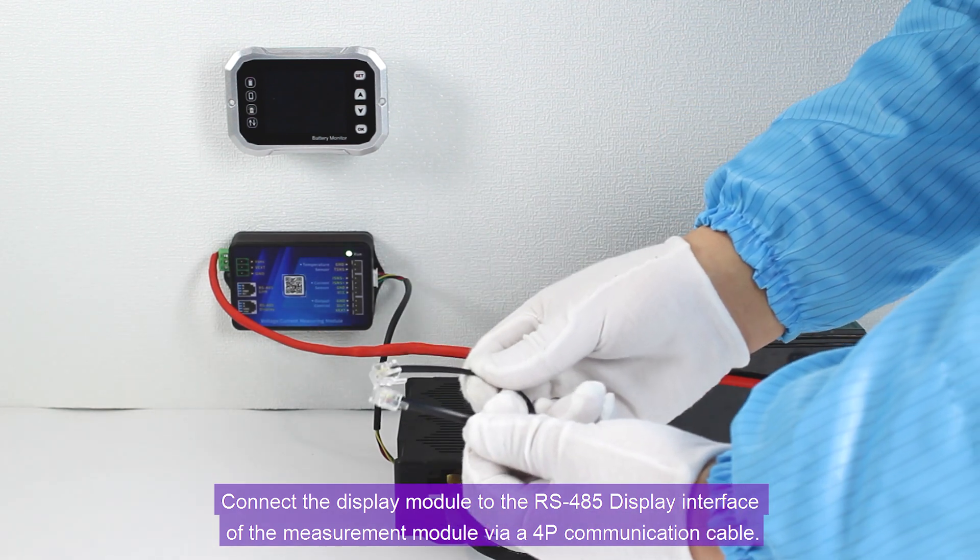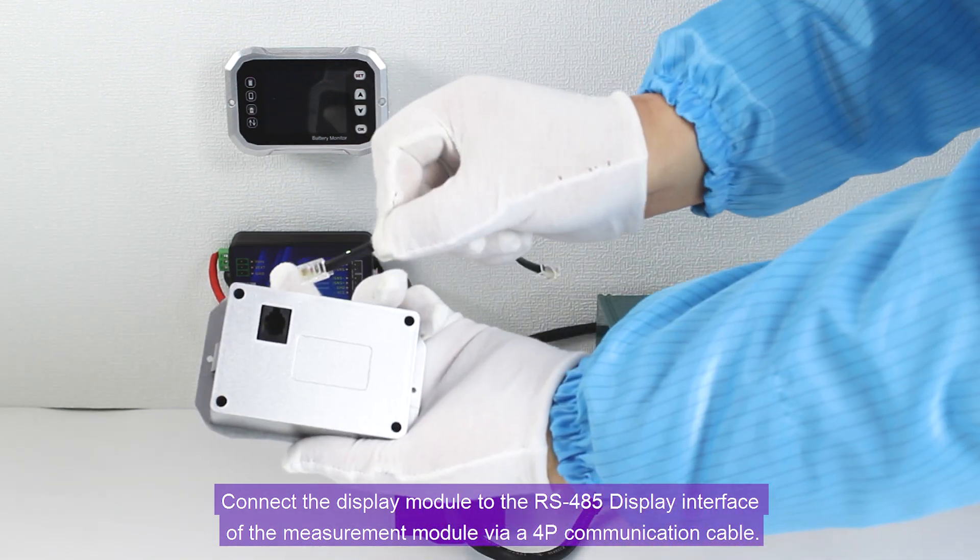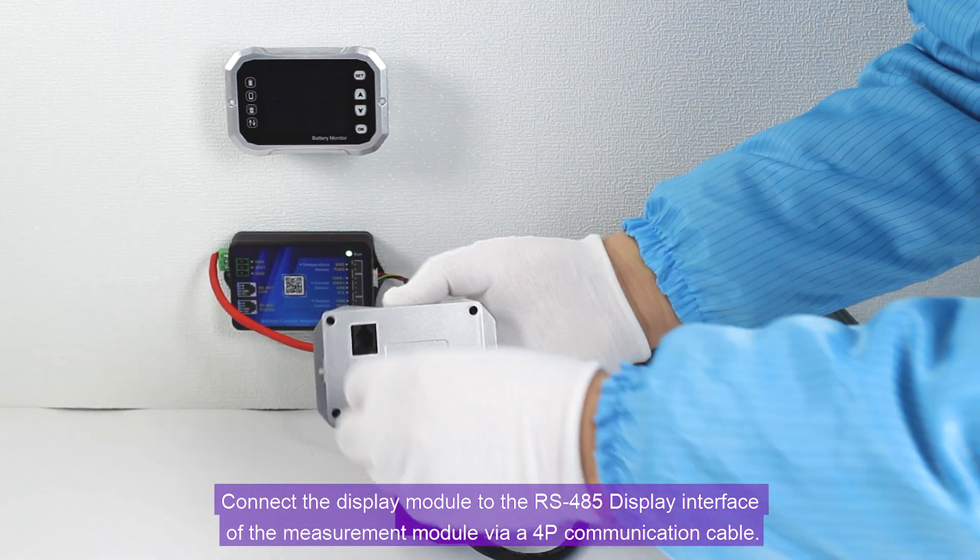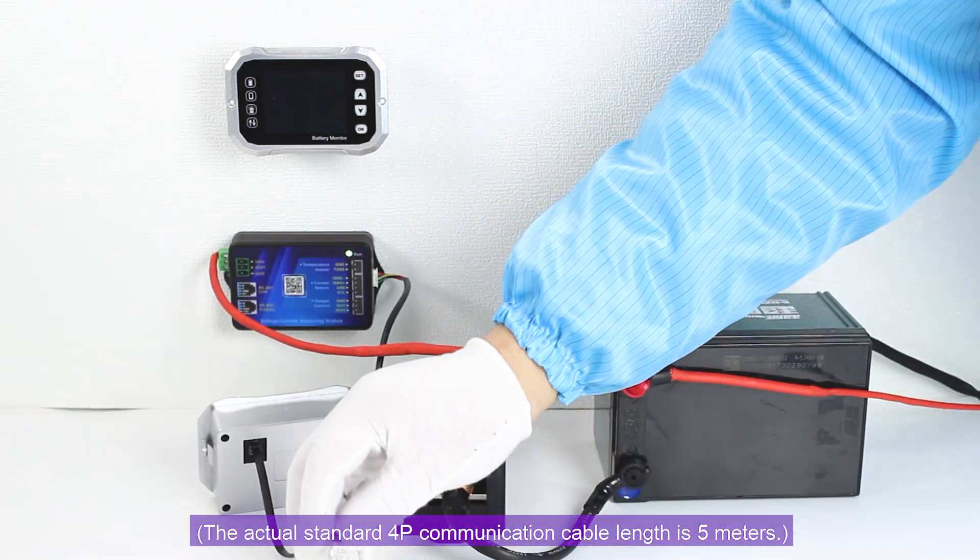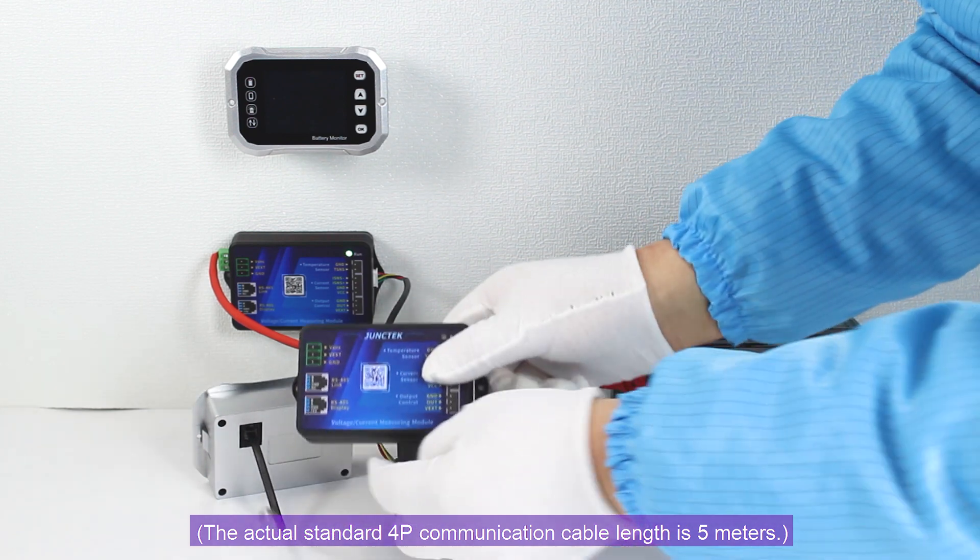Connect the display module to the RS-485 display interface of the measurement module via a 4P communication cable. The actual standard 4P communication cable length is 5 meters.